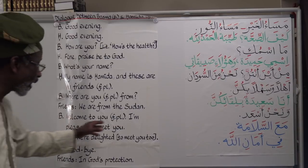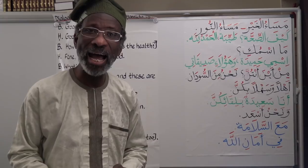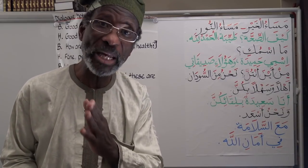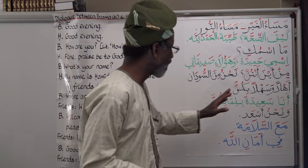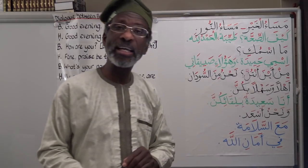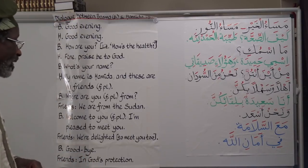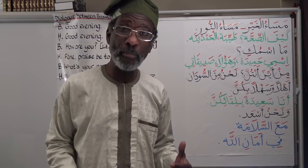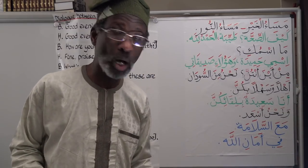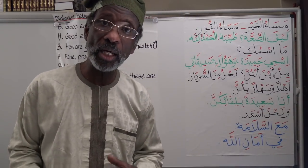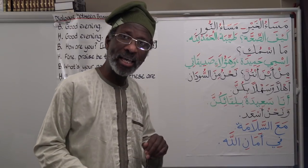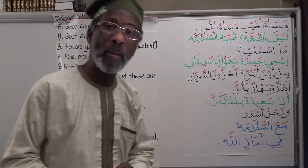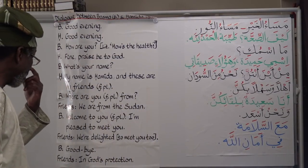'Ahlan wa sahlan bikunna' — welcome to you all. When addressing boys we say 'bikum', but here 'bikunna' because we are speaking to a group of girls. 'Ana sa'eedatun bilqa'ikunna' — I am pleased to meet you all. A girl speaking says 'sa'eedatun'; a boy says 'sa'eedun' without ta marboota. The 'kunna' ending indicates an attached pronoun for a group of girls.